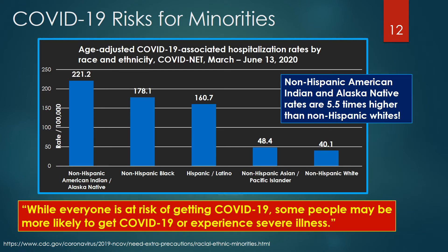While everyone is at risk of getting COVID-19, some people may be more likely to experience severe illness. This graph shows age-adjusted hospitalizations for COVID-19 based on race and ethnicity. Non-Hispanic American Indian and Alaska Native rates were highest at 221.2 per 100,000, followed by non-Hispanic Blacks at 178.1, Hispanic and Latinos at 160.7, non-Hispanic Asian and Pacific Islanders at 48.4, and non-Hispanic Whites at 40.1. Non-Hispanic American Indian and Alaska Native rates are 5.5 times higher than non-Hispanic Whites.